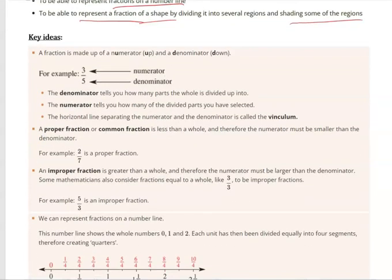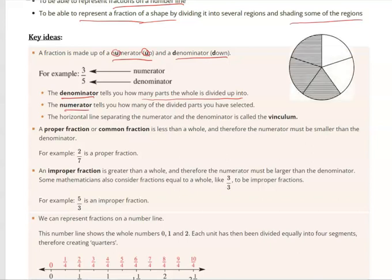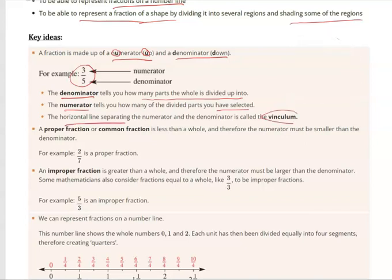So we have two things. The numerator is up at the top and the denominator is down below. The numerator tells you how many bits of the total, which is the denominator. The denominator tells you how many parts the whole thing is divided up into. So there's five parts, and the numerator tells us that, in this case, three of those five parts have been selected. The horizontal line separating these two is called the vinculum.